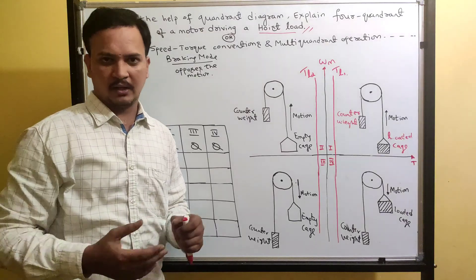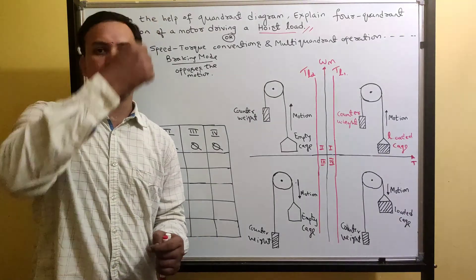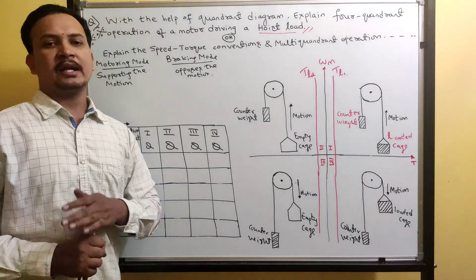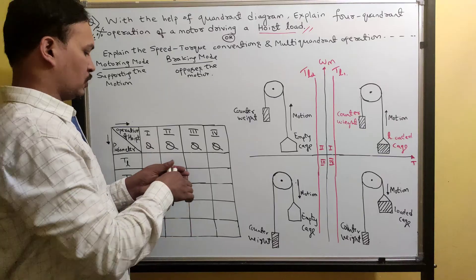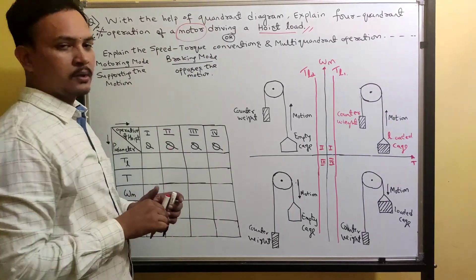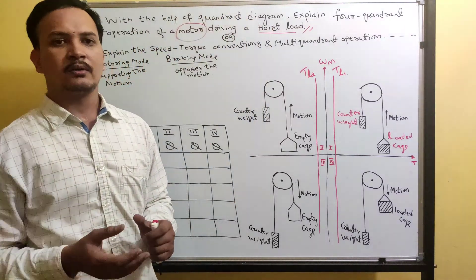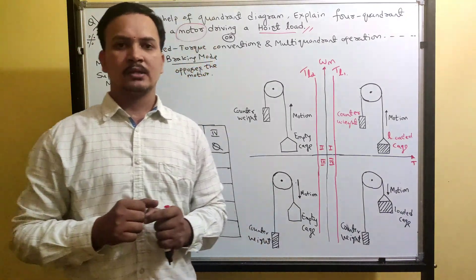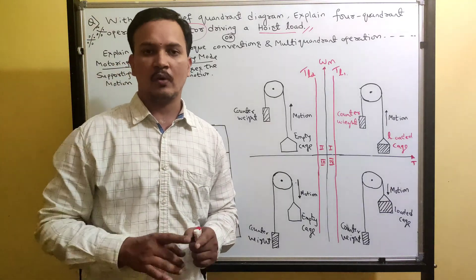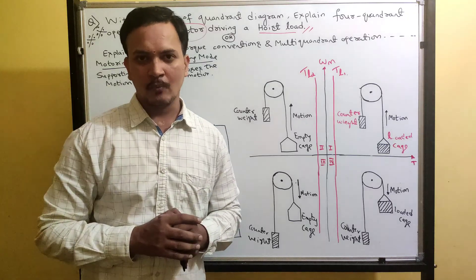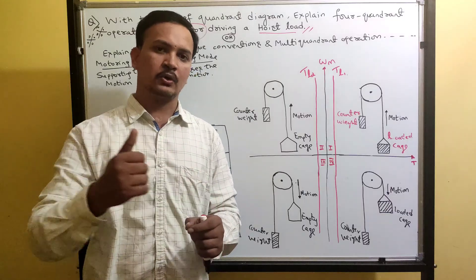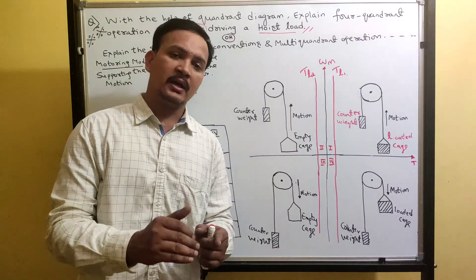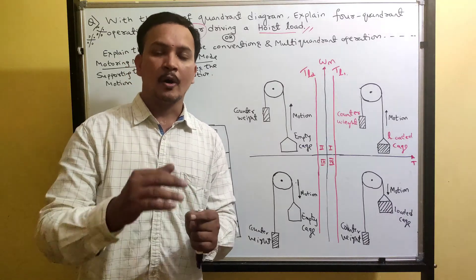A hoist load is a lift moving a man or material from bottom to top and from top to bottom. Before understanding this topic we need to know some basics. The motor operates in two modes: one is motoring mode and another is braking mode. Motoring mode converts electrical to mechanical energy and supports the motion.